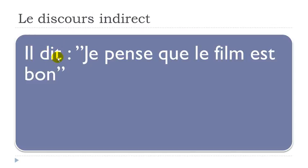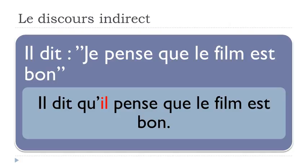First example: il dit — he says — je pense que le film est bon. I think that the film is good. If you want to put this into indirect speech, you can't keep je, so you modify it according to il. It becomes: il dit qu'il pense que le film est bon. That's the only thing you need to modify — the subject je changes to match the reporting subject il.